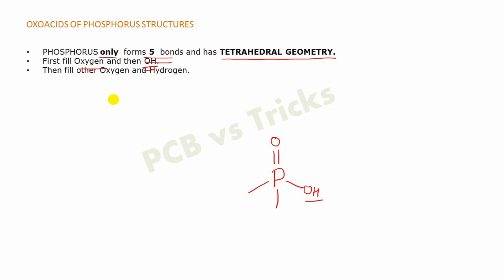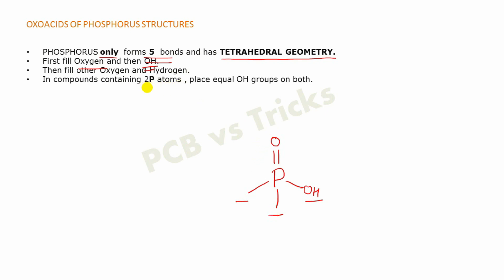The next point says that now you have to fill oxygen and hydrogen atoms — at the remaining positions, you have to fill oxygen and hydrogen. The next point says that in compounds having two phosphorus atoms, you have to place equal OH groups on both phosphorus atoms to maintain the symmetry of the compound. When we make the oxoacid structures, this point will become clear.